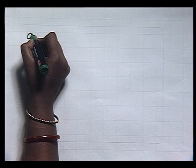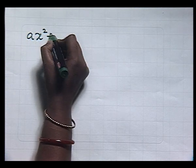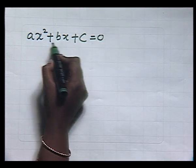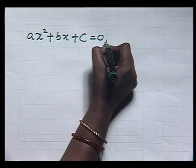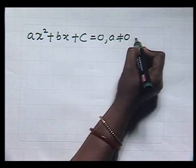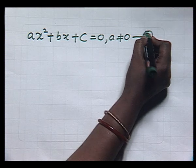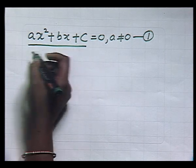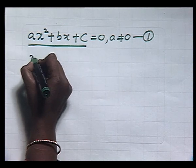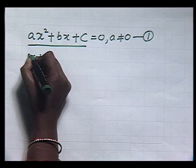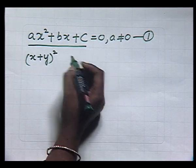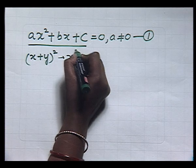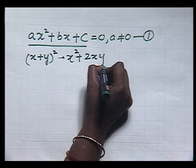Consider the equation Ax squared plus Bx plus C equal to 0, where A, B and C belong to the set of real numbers and A is not equal to 0. Let this equation be number 1. Now, we want to change this expression into a perfect square form, that is an expression of the form (x plus y) whole square. Its expansion is x squared plus 2xy plus y squared.